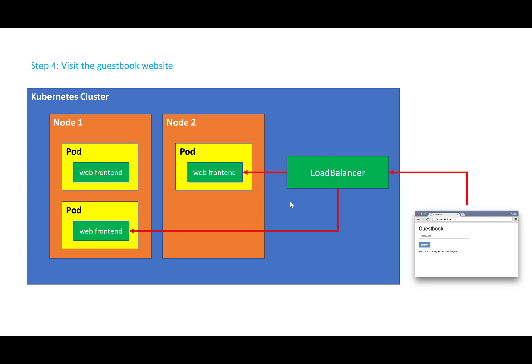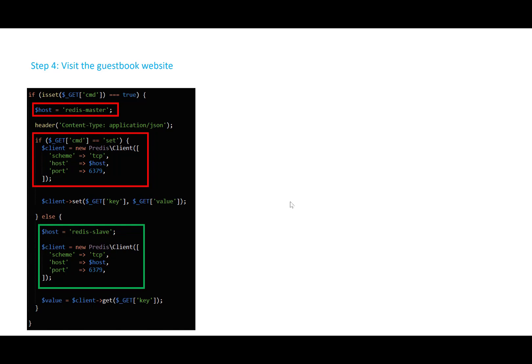We also have the requirement that any write should happen to the Redis master and all reads should happen on the Redis slave. If you look at the PHP file in the source code on GitHub, you will see that if there is a set — meaning if there is a write — then the host it wants to use is redis-master. If it is not a set — in which case it is a read — then we want to use the host which is the Redis slave. This is the service that points to the Redis workers, and redis-master is the service that points to the Redis master.